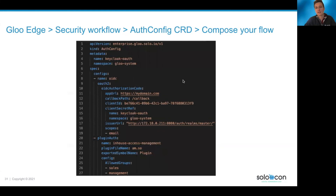The next example is another AuthConfig object with two steps as well. The first step is OpenID Connect again, and the second step is a custom plugin. Once the end user is authenticated, I will pass their identity to my custom access management solution, and this solution can fetch the groups that the user is a member of and authorize the request if appropriate. So that's another way of doing authorization. That's it for now — thank you.